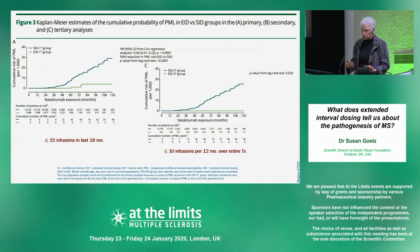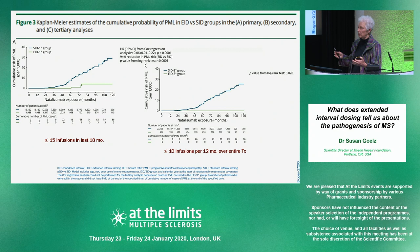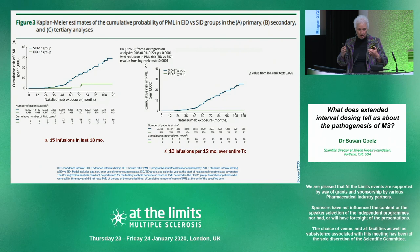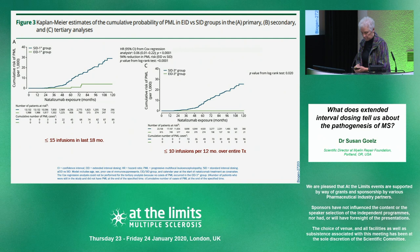Biogen did this TOUCH analysis with predefined definitions of extended interval dosing. Looking at the third definition — fewer than 10 infusions per year — this is real-world data. In practice, dosing intervals vary: 28 days, 34 days, 42 days — somebody goes on vacation. Trying to define that in the real world was quite difficult. The definition that seems most efficacious shows no cases of PML in the extended dose group, versus a number of cases in the standard 28-day group.